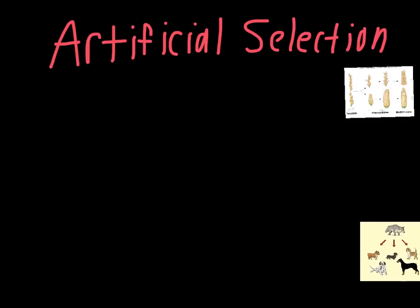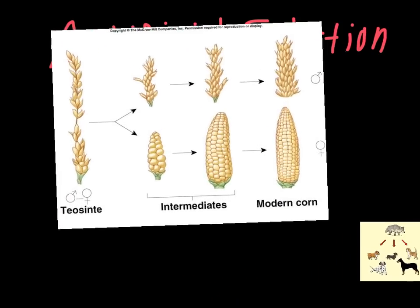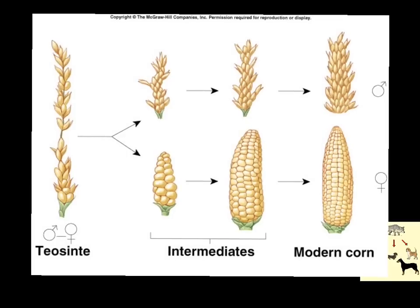Another example for us to look at has to do with corn. Modern corn is actually very different from the ancestral plant species it came from. Teosinte is the original species that modern corn is modified from. You can imagine when people were planting this early on, they would select the ones that provided them with the biggest kernels or the largest ears, and eventually you get to our modern corn species.